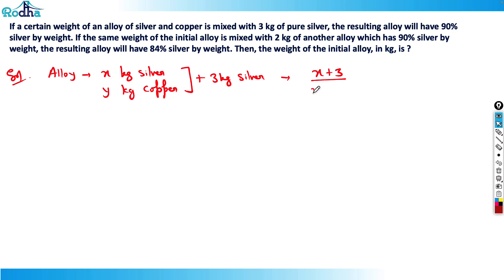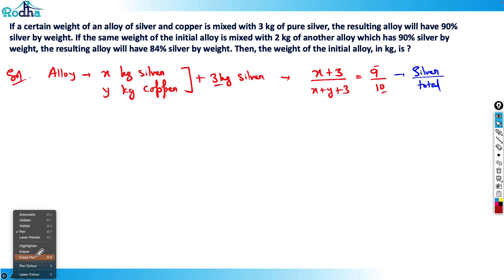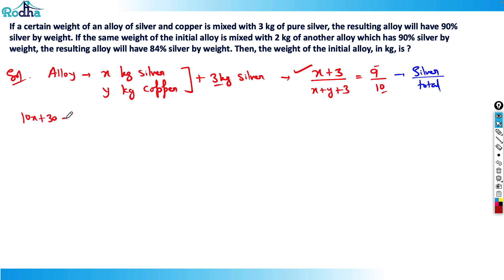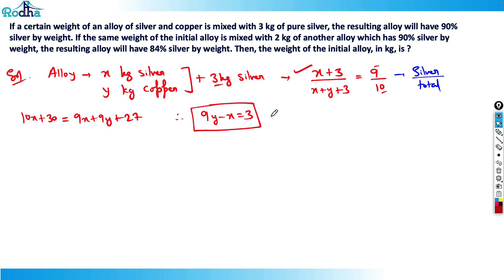The resulting alloy has 90% silver by weight. So the ratio of silver to total weight is: (x + 3) / (x + y + 3) = 9/10. Solving this gives: 10x + 30 = 9x + 9y + 27, which simplifies to 9y - x = 3. That's Equation 1.